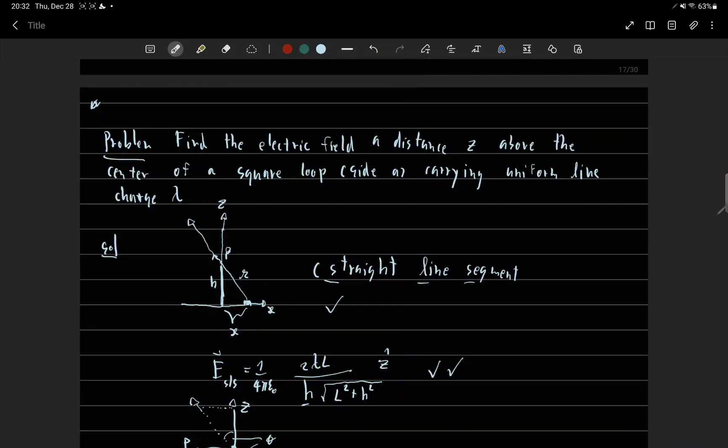Find the electric field a distance z from the center of a square loop side A carrying uniform line charge lambda.